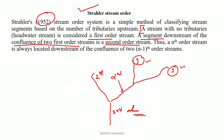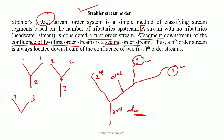And this process will go on. Simply, if two first order streams meet, you get a second order stream. If a second order and another second order stream meet, the resultant stream will be a third order stream. Similarly, two third order streams meeting will produce a fourth order stream, and this will continue.